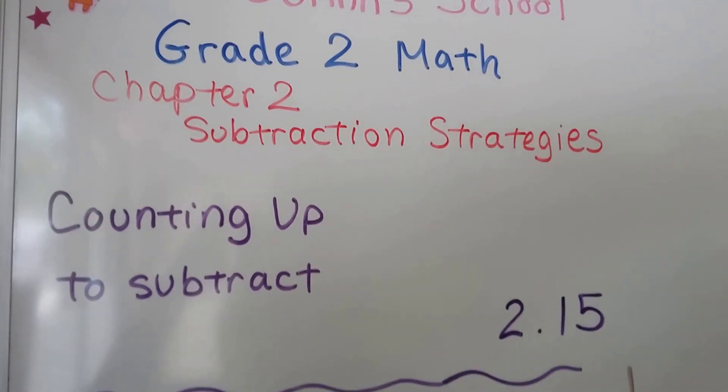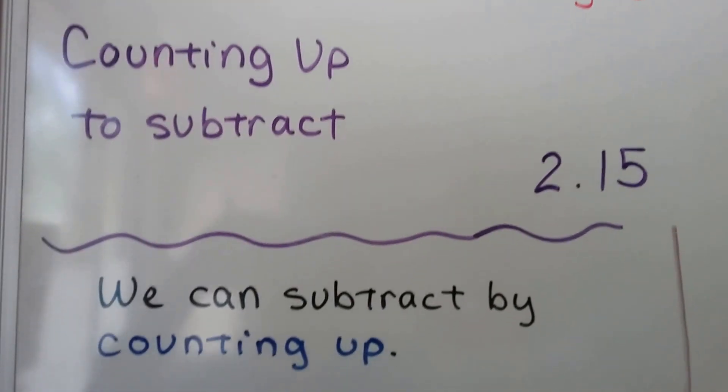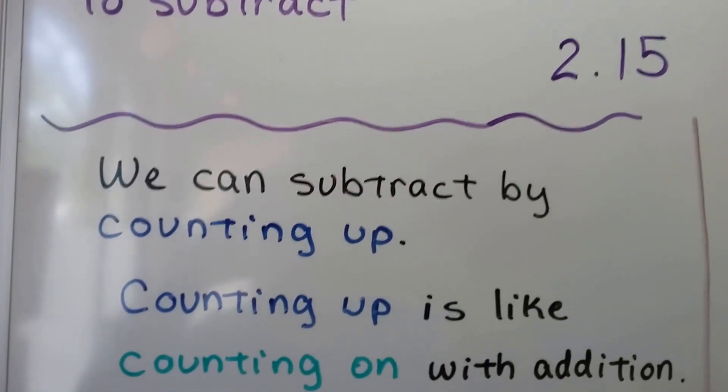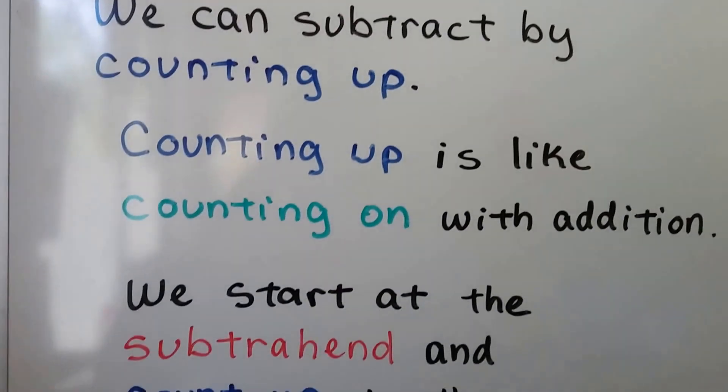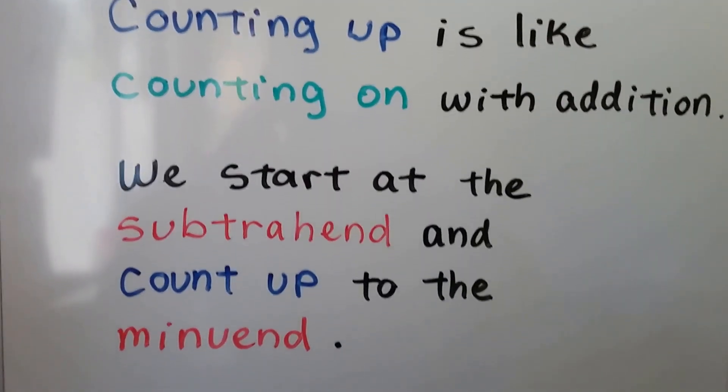Counting up to subtract. We can subtract by counting up. Counting up is like counting on with addition. We start at the subtrahend and count up to the minuend.